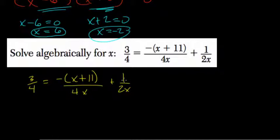Here, 1 over 2x, we can change that by doubling the numerator and denominator to 2 over 4x.